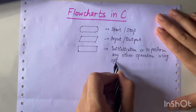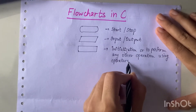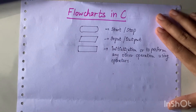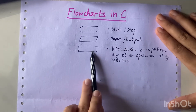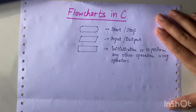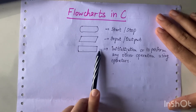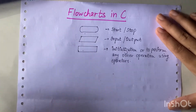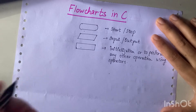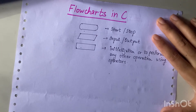We use a rectangular box to initialize something. For example, if we have to initialize i equals zero, then 'i = 0' will come inside the rectangular block. Or if we are performing any operation, such as adding two numbers, then 'sum = a + b' will come inside the rectangular box. So these are the three main blocks we use.